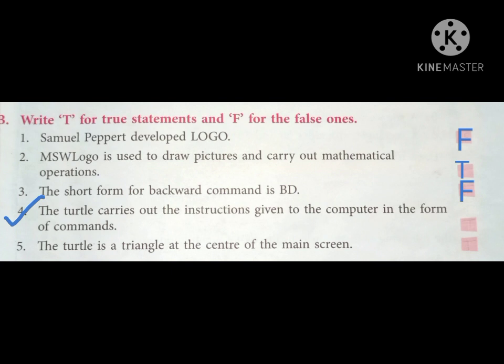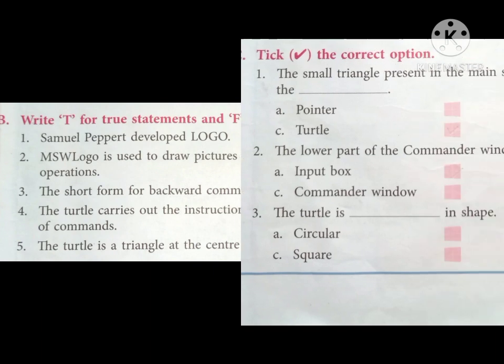Number five: The turtle is a triangle at the center of the main screen. Yes, we know that, so we will write T on the box.